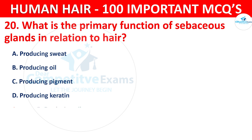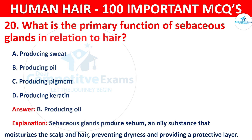The correct answer is B — producing oil. Sebaceous glands produce sebum, an oily substance that moisturizes the scalp and hair, preventing dryness and providing a protective layer.